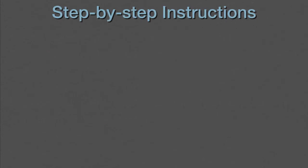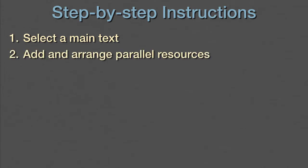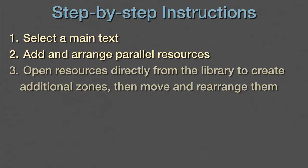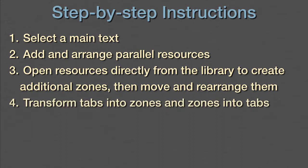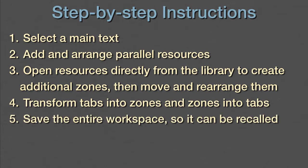Here are step-by-step instructions to create our own custom study Bibles. Select a main text. Add as many parallel resources as we want, then arrange them however we'd like. Open resources directly from the library to create additional zones, and then move and rearrange them. Remember, we can also transform tabs into zones and zones into tabs. And finally, we save the entire workspace so it can be recalled easily.